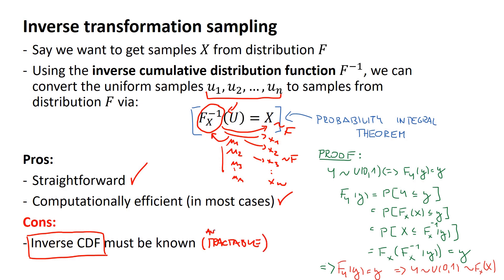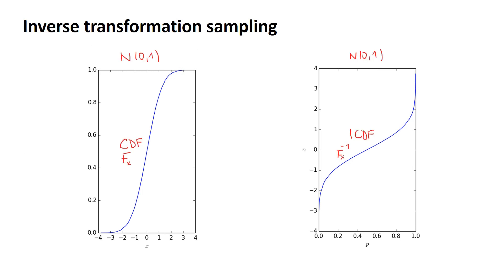So let's look at the intuition behind it. On the left side we have the cumulative distribution function of the normal distribution; on the right side we have the quantile function, or ICDF. Let's say we want to obtain samples from the normal distribution — X should be normally distributed — and we will use inverse transform sampling. Just a reminder: the probability density function of the normal distribution is the bell curve, and if you integrate it you get the CDF.